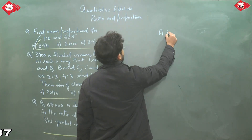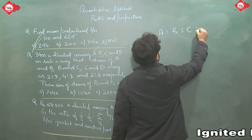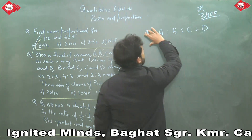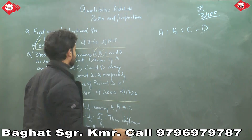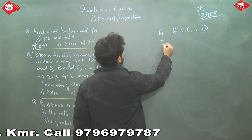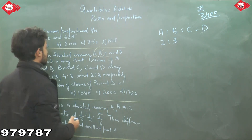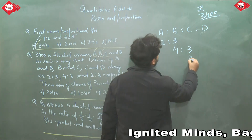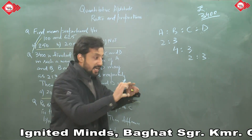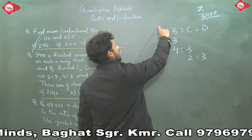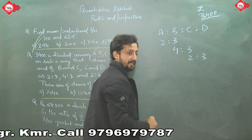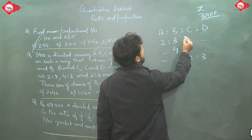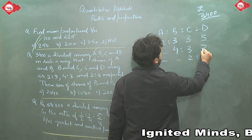To find A:B:C:D, we fill in the gaps. The adjacent numbers must be matched: write 3 next to B in the first ratio, 3 next to B in the second, 3 next to C in the second and third. The nearest numbers are 4, 2, and 2. Now we multiply across: A's share = 2×4×2 = 16, B's share = 3×4×2 = 24, C's share = 3×3×2 = 18, D's share = 3×3×3 = 27.